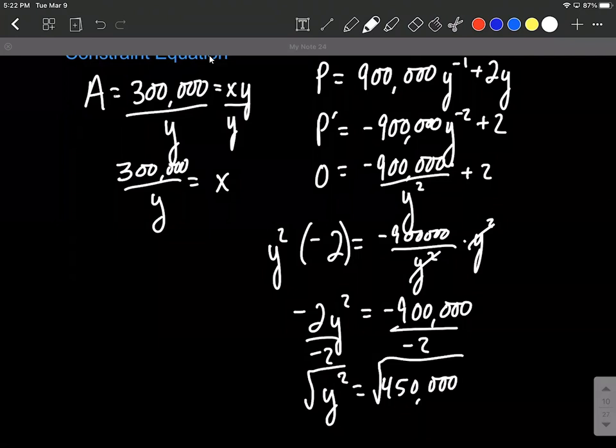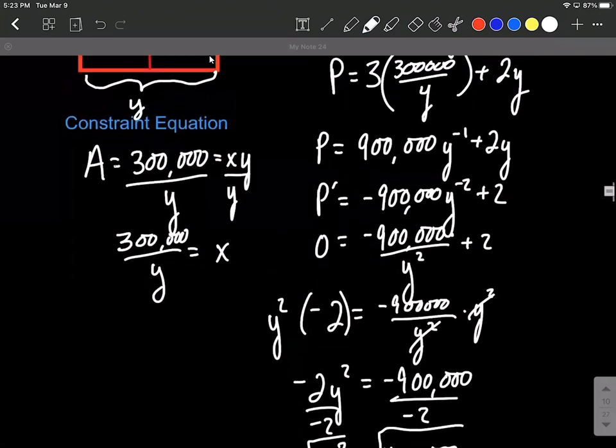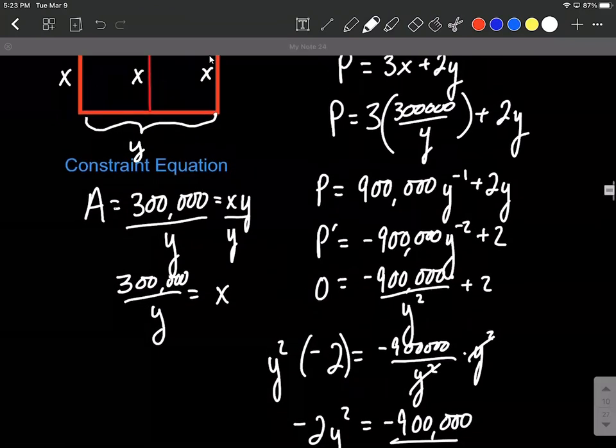Now we don't need to worry about the positive and negative that we normally do when applying a square root. Because remember, y is this side length of our fence.